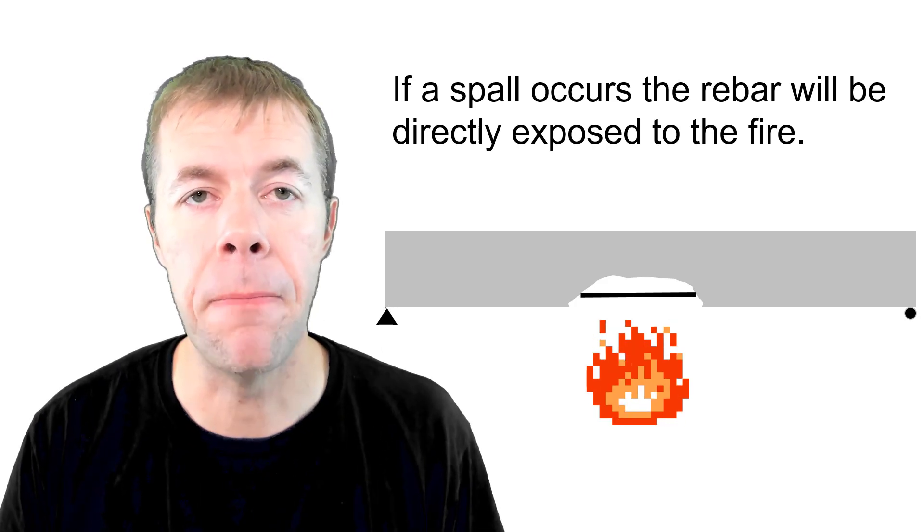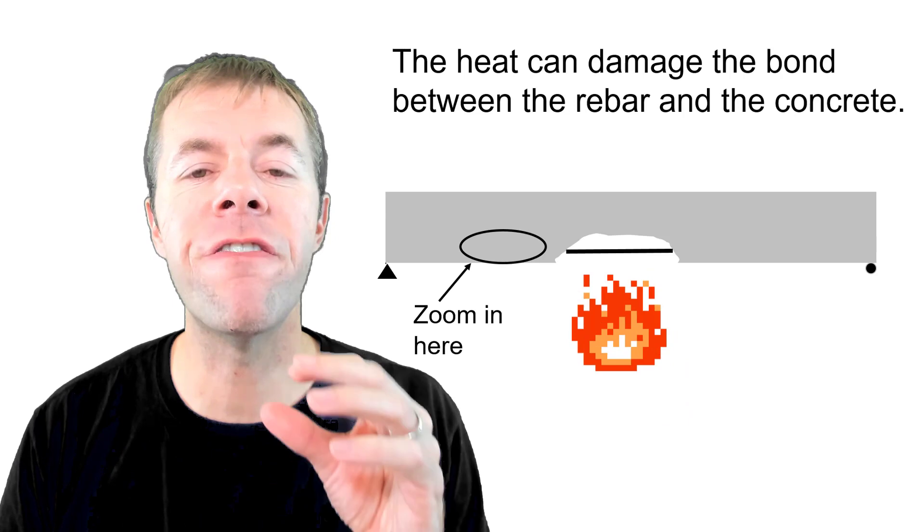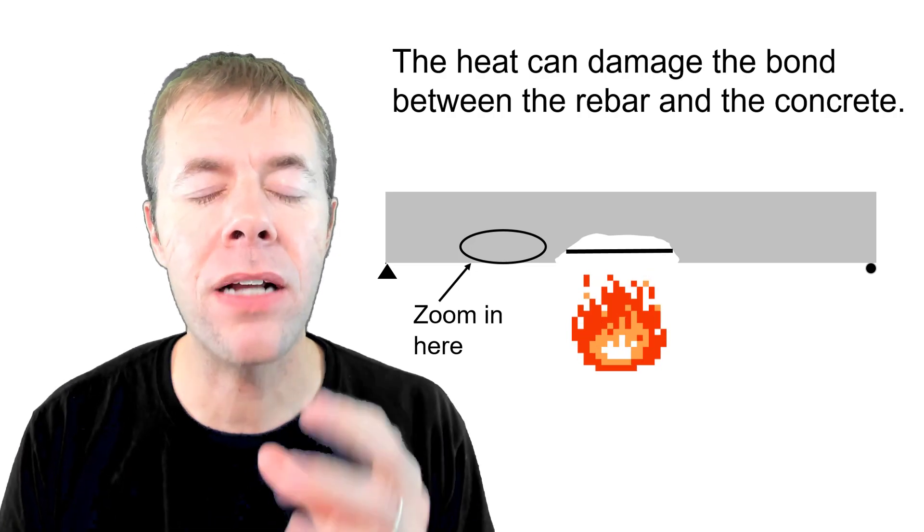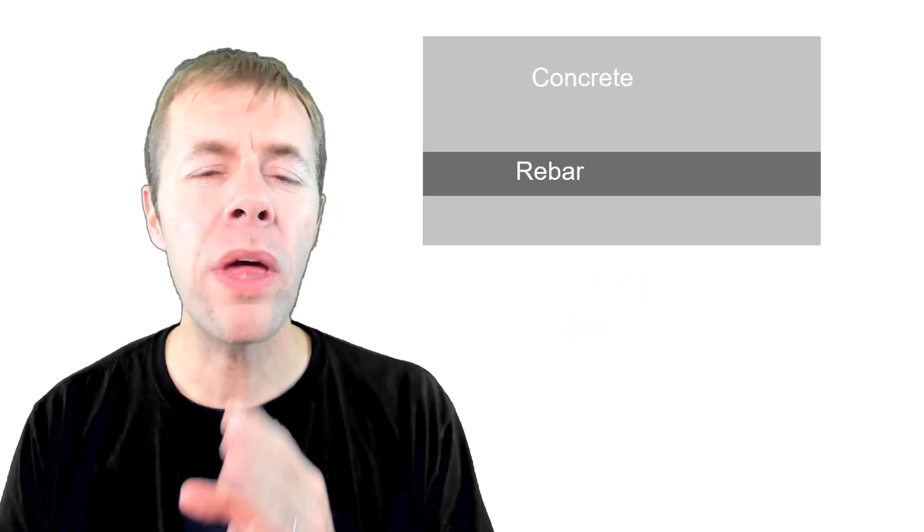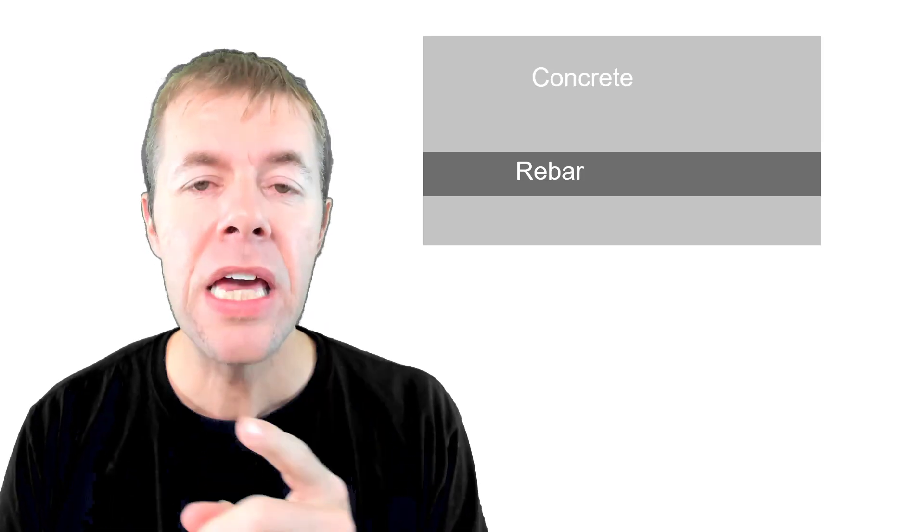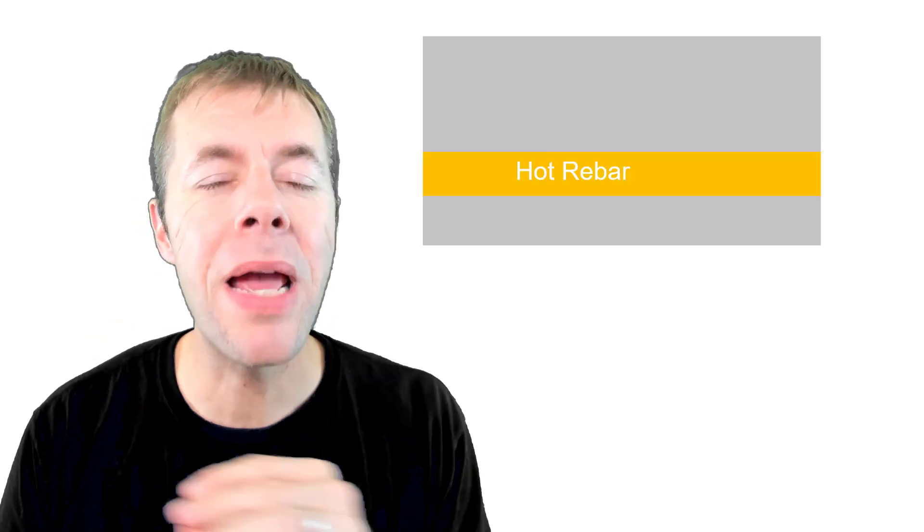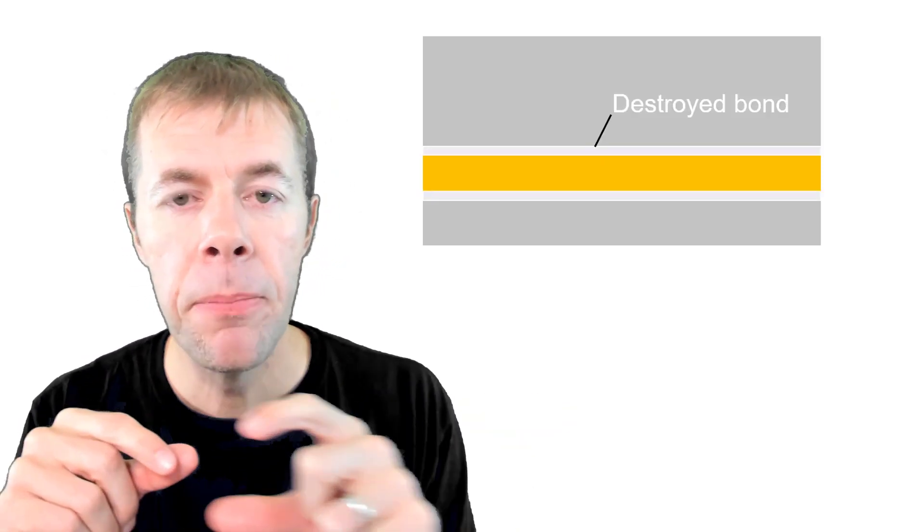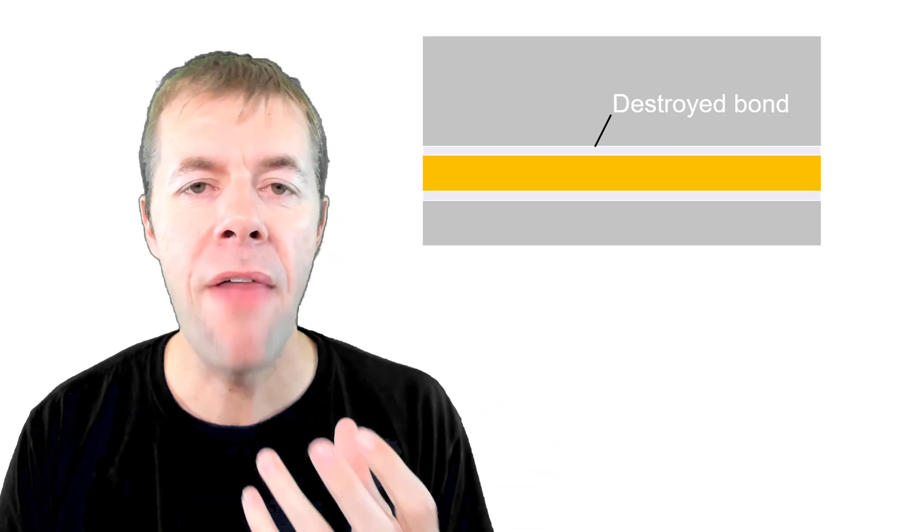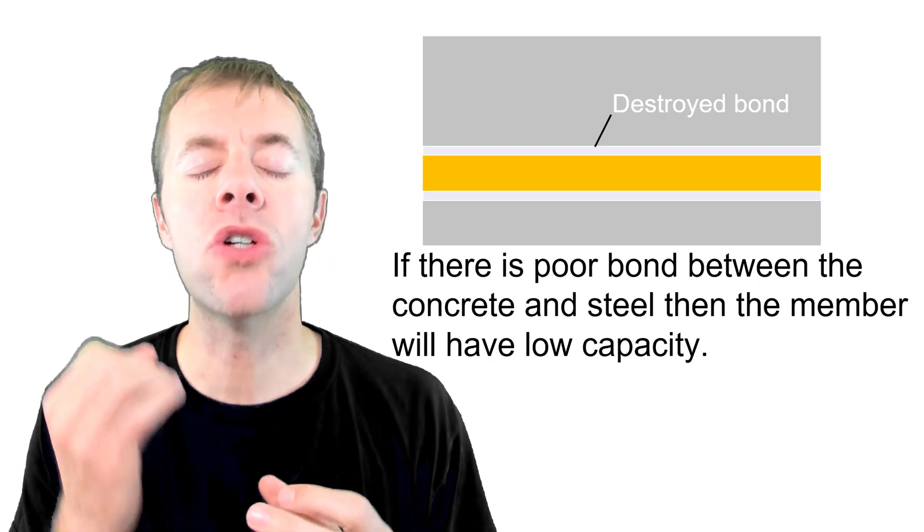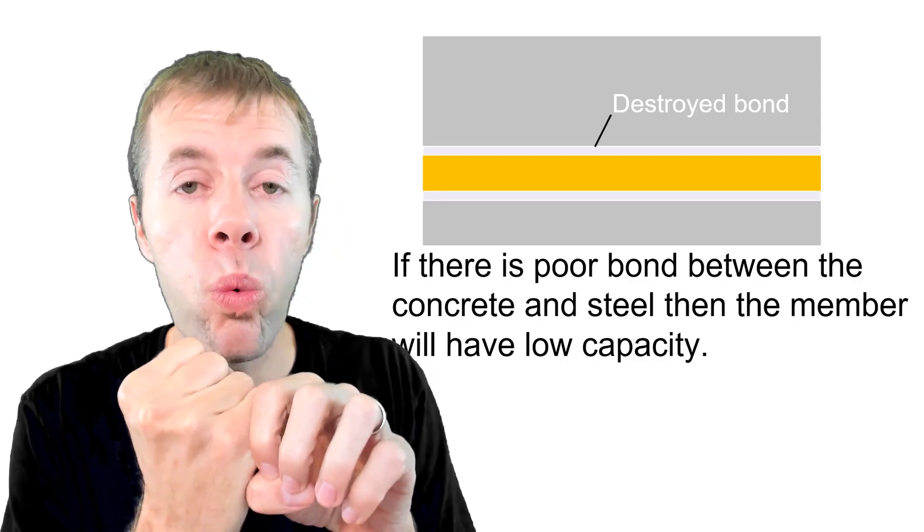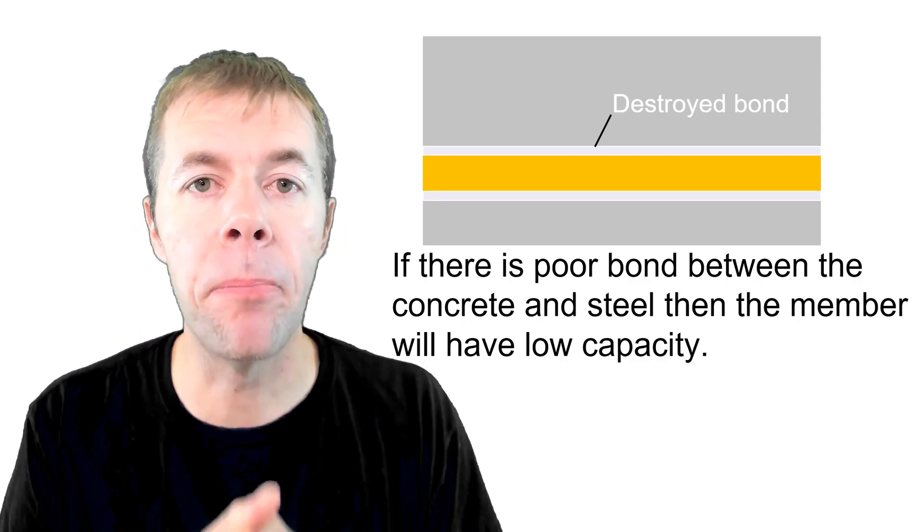Now we've already talked about at what temperatures the rebar or pre-stressing strands may be in trouble, but there's something else that can happen. If we zoom in in this area, we can actually look at the bond. That's the grip between the steel and the concrete and that can sometimes be damaged. Even though it may not spall in this area, even though it may spall someplace else, the rebar may heat up and once it does, it actually may burn or destroy the bond between the bar and the concrete itself. And this localized destroying of the bond means your concrete will have poor flexural capacity. The bar may just rip right out of the concrete because it's not bonded well. This is crazy dangerous.